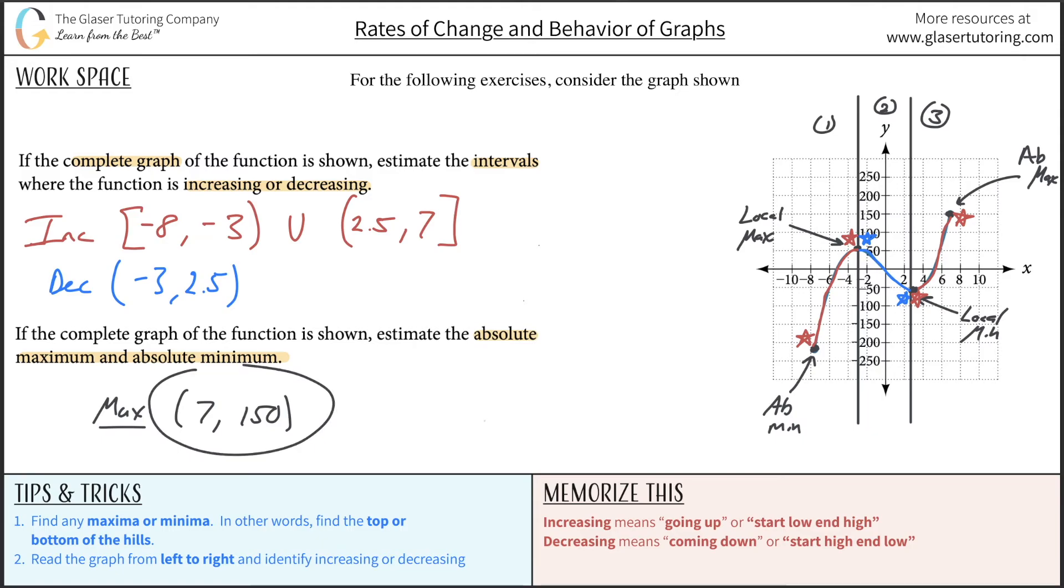And the minimum then will have the point, it looks like it's going to be about the x value is about negative 8, and the y value looks like it's going to come down here until about, I don't know, negative 225 or so. So put a little comma, negative 225. And that would be the maximum minimum points.